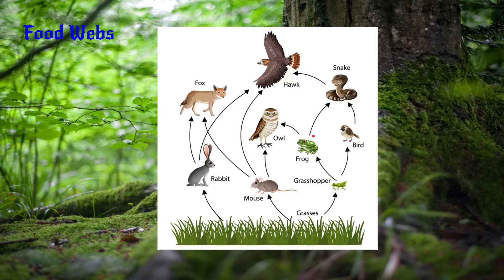We're going to go over prey and predator. Prey is when another animal eats it. For example, if a frog eats a grasshopper, the grasshopper would be the prey and the frog would be the predator. However the frog isn't only a predator — it's also prey, since the owl is eating the frog. So it's both prey and predator. But a grasshopper is just prey.